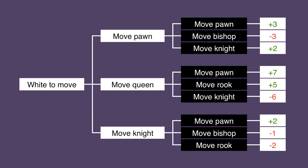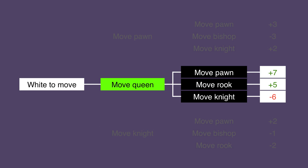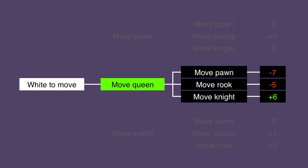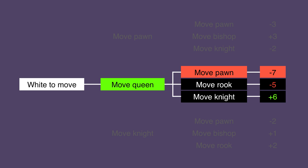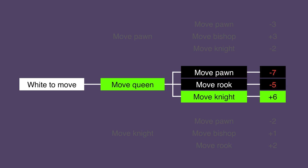White might look at this tree and say the highest that I can get is plus 7 — I move my Queen and Black moves his Pawn — so he might be tempted to move his Queen. Black in turn will want to maximize his potential payoff. Since it's a zero-sum game, Black's payoffs will be the opposite of White's, so moving his Pawn would be bad for Black, offering him a payoff of negative 7. He can do much better by moving his Knight for a payoff of plus 6. Looking at how that affects White, we see that White's payoff will be negative 6 — the lowest payoff on the board for him.